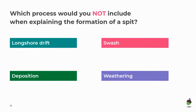Let's have a think — which process would you not include when explaining the formation of a spit? It is weathering. So we need longshore drift, swash makes up longshore drift, and deposition is vital because we have to deposit that sand to make the spit.